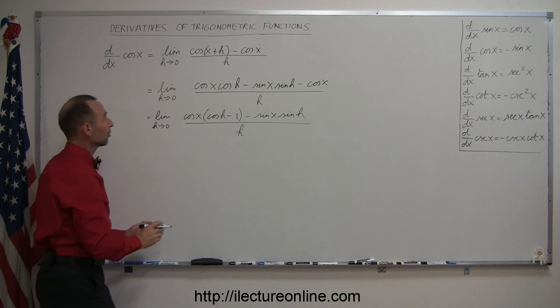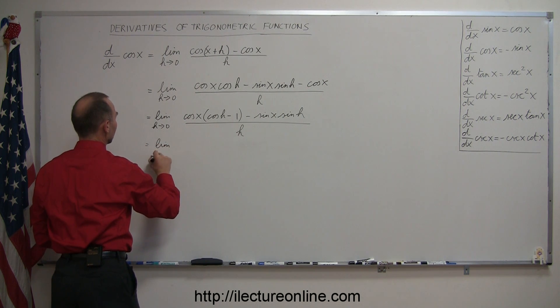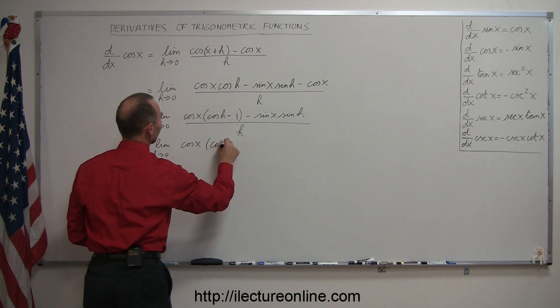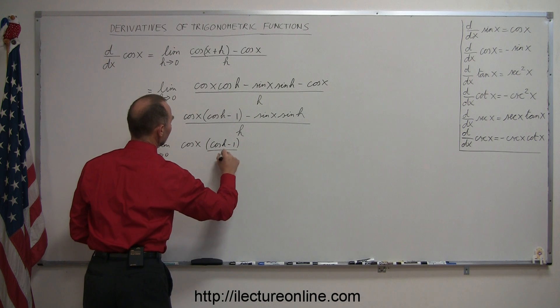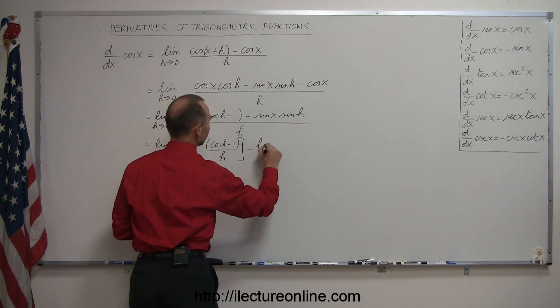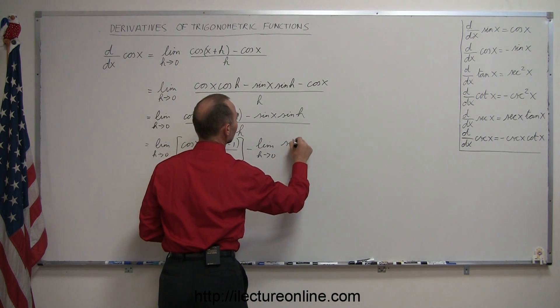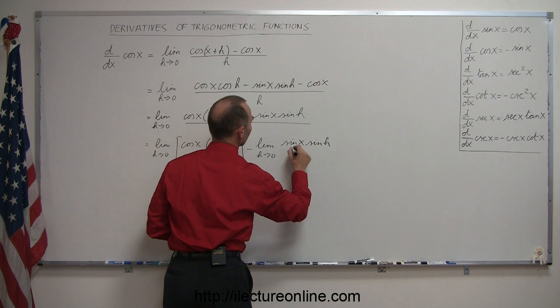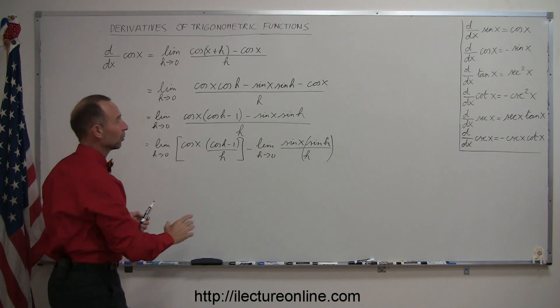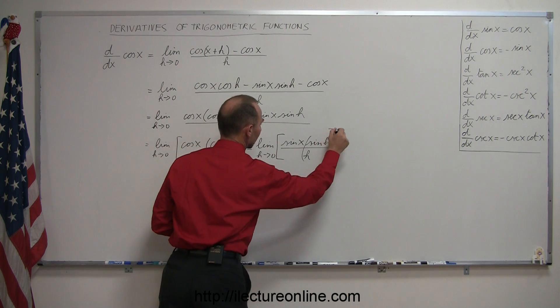Then we're going to separate this into two fractions, and so this is equal to the limit as h goes to zero of the first one, which is a cosine of x times the cosine of h minus one over h. And that's going to be minus the limit as h goes to zero of the remaining, which would then be the sine of x times the sine of h over h. I want to put parentheses around that so you can see that we're going to associate these two together when we take the limit of that.